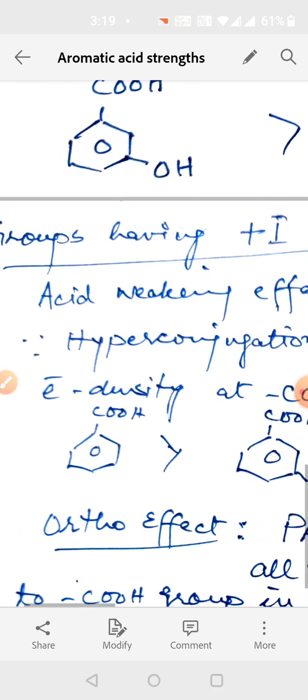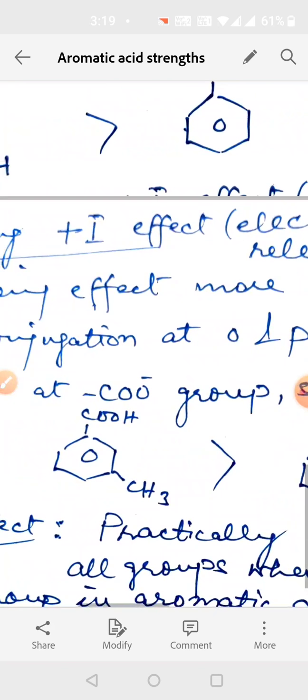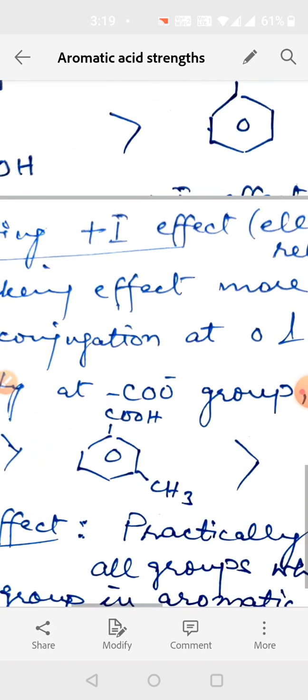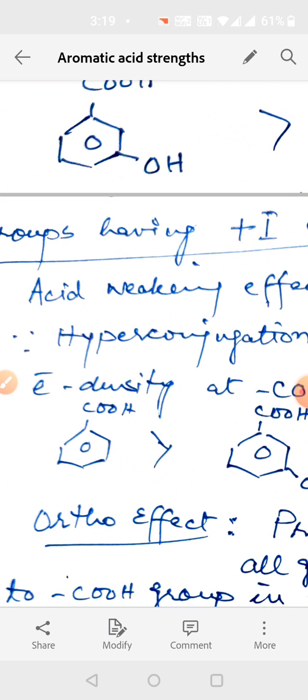Then coming to groups having plus I effect. Plus I effect groups are CH3, C2H5, alkyl groups. Alkyl groups will increase electron density at ortho, meta, para, all positions.